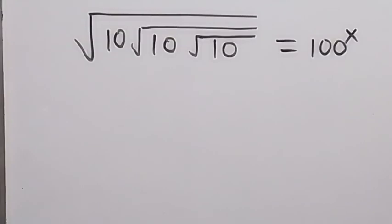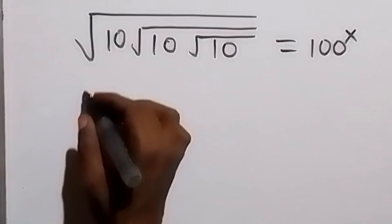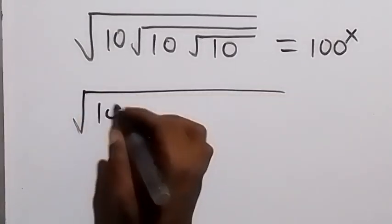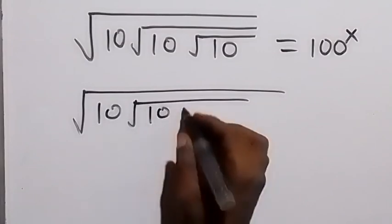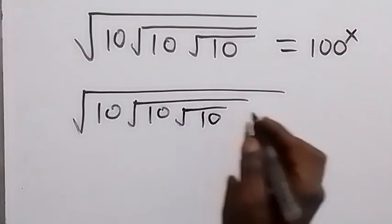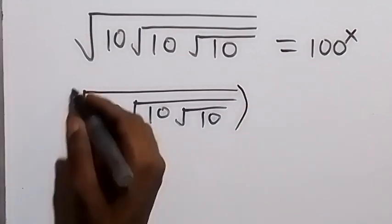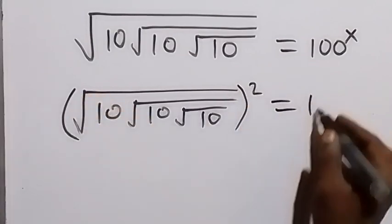Hello, you are welcome. How to find the value of x in this nice algebra equation. From here we can square both sides — on this side we have square root of 10, then root 10, then root 10. We square this side, squaring everything on this side.